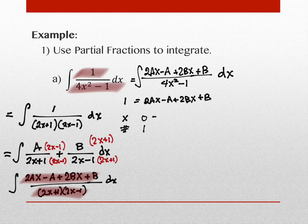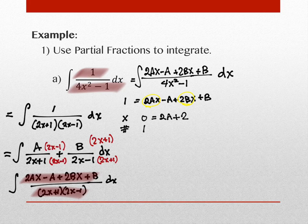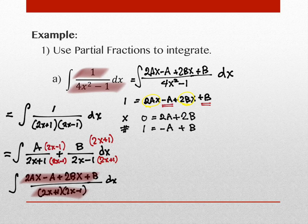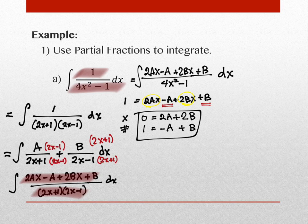What we have here is a system of equations — two equations and two variables. You know two ways to solve this: elimination/addition/subtraction, or substitution. This one works really well with elimination. I can divide the first equation by two to get A + B = 0, and I have −A + B = 1. Adding them gives 2B = 1, so B = 1/2.